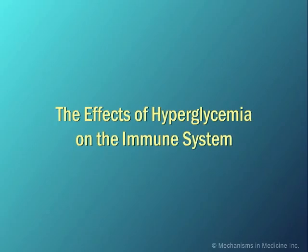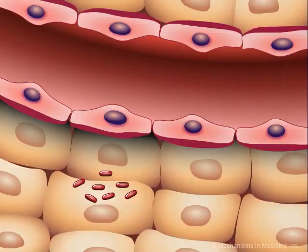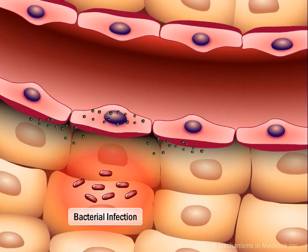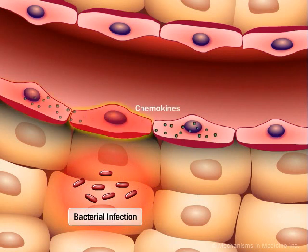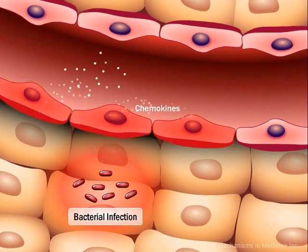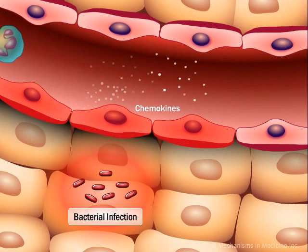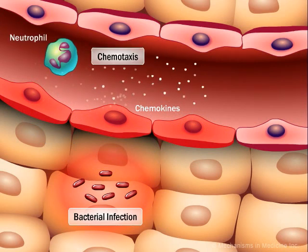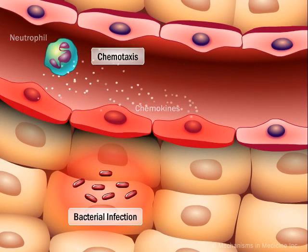The Effects of Hyperglycemia on the Immune System. Under normal circumstances, bacterial infection results in the release of chemokines that attract circulating neutrophils to the endothelium. This process is known as chemotaxis.